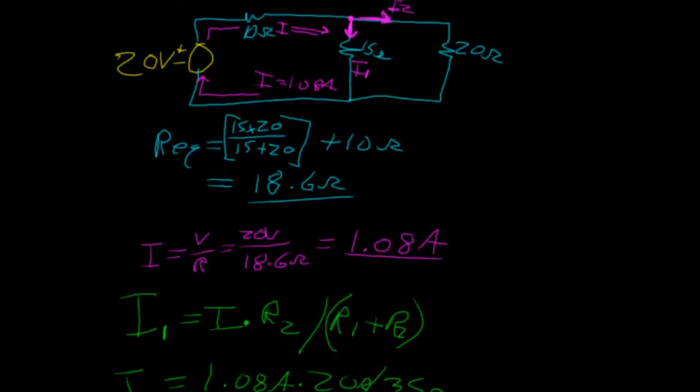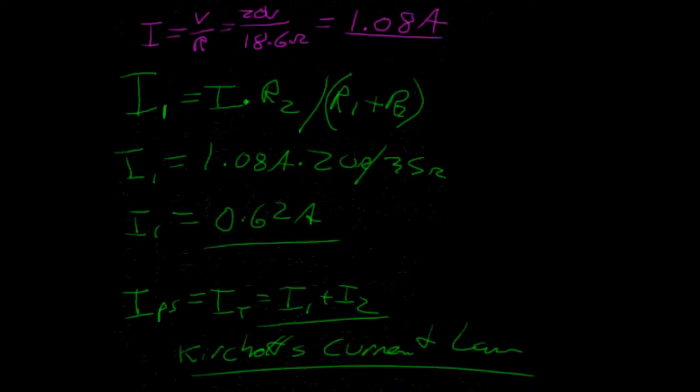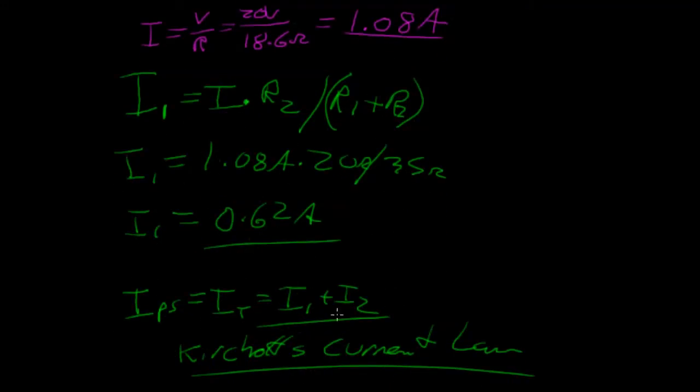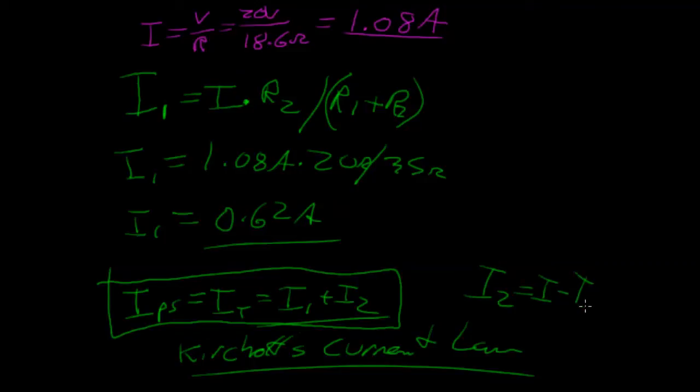If we wanted to solve for I2, we could just rearrange this equation to get I2 equals I minus I1, which would be 1.08 minus 0.62. Sorry, I'm sort of running out of space here, minus 0.62, which is 0.46 amps.